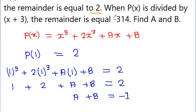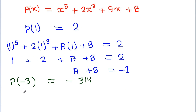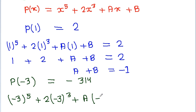Again it is given that when p(x) is divided by x plus 3, we get a remainder of minus 314. So p(minus 3) must be equal to minus 314, and p(minus 3) will be minus 3 to the power 5 plus 2 times minus 3 cubed plus a times minus 3 plus b, that must be equal to minus 314.